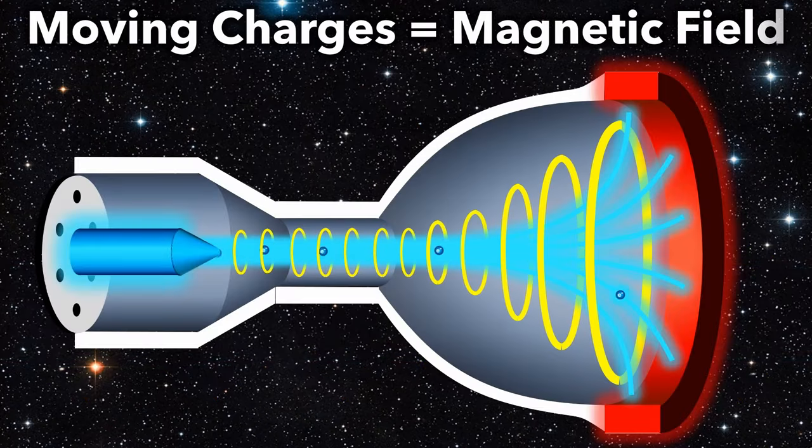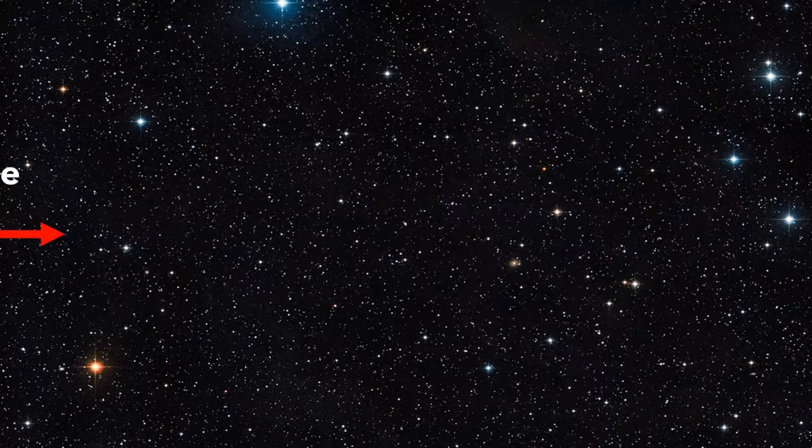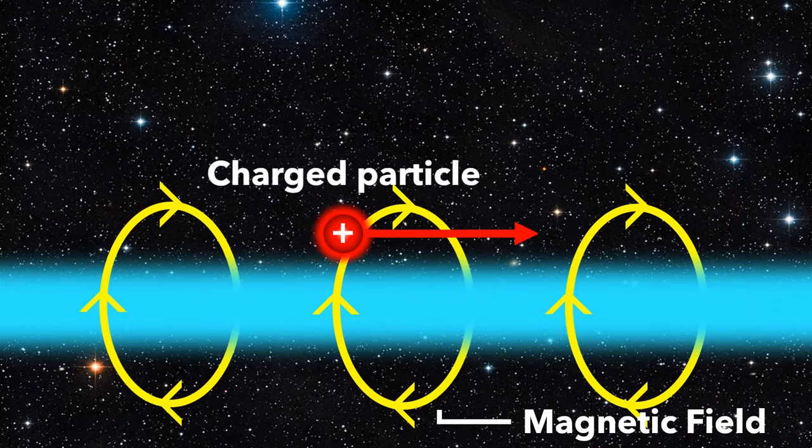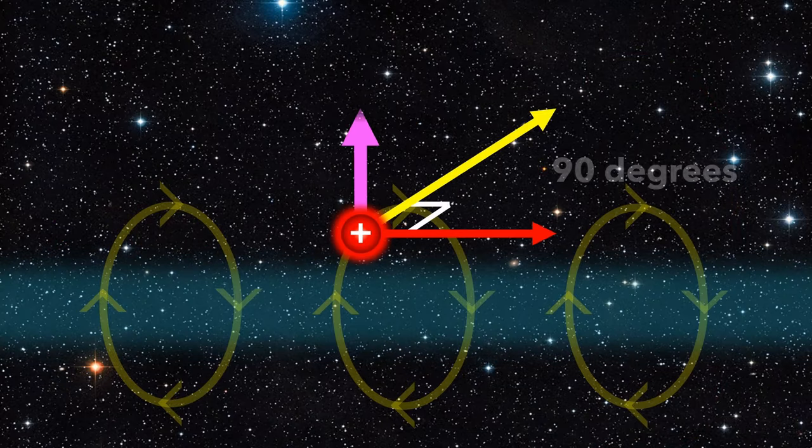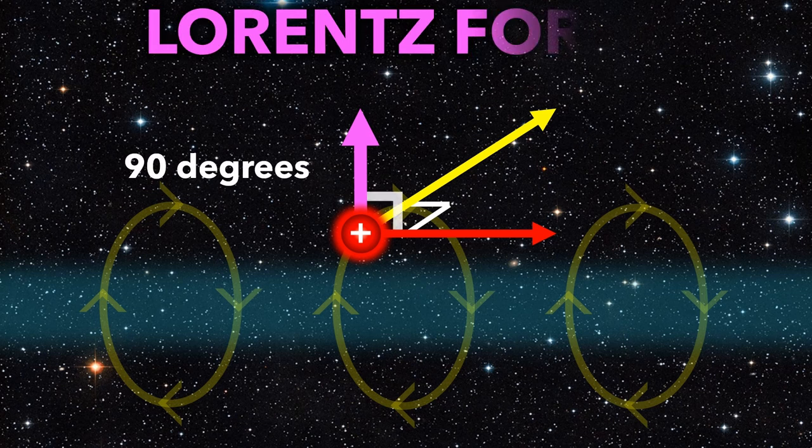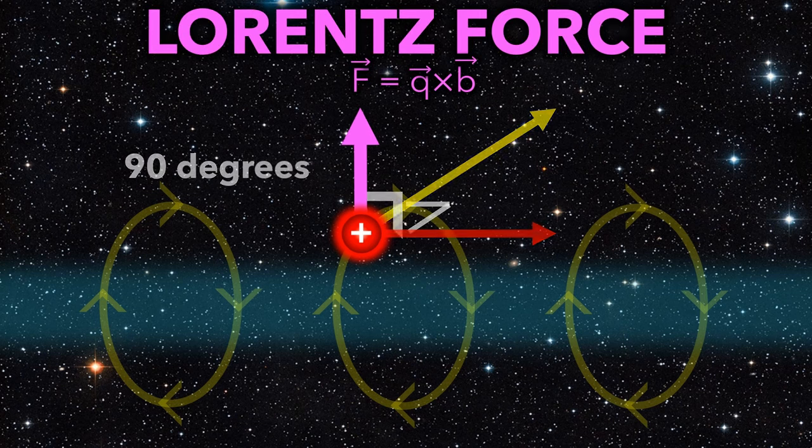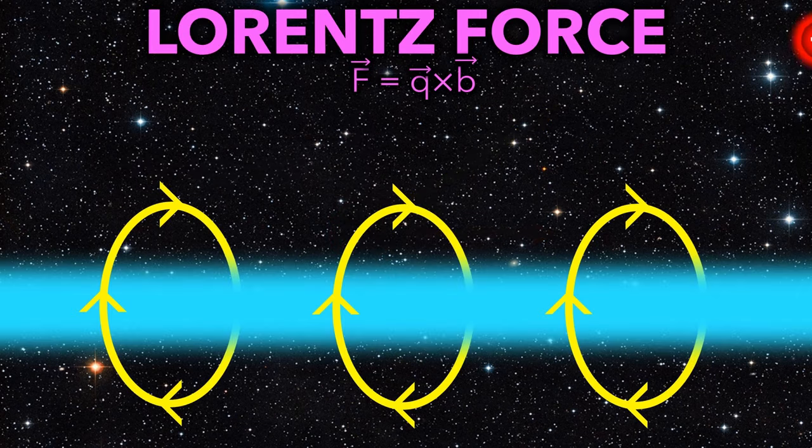Step 3. Moving charges, like in the current stream, create a circular magnetic field around itself. When charged particles move through that magnetic field at 90 degrees, that charged particle feels a magnetic force, also at 90 degrees, called a Lorentz force, that pushes the charged particle away.